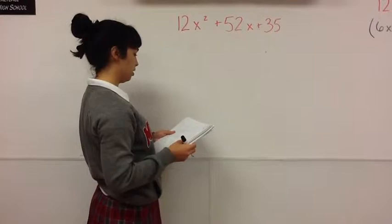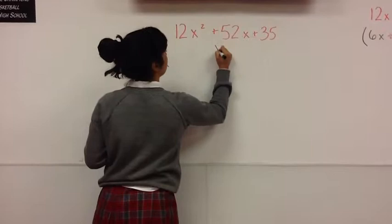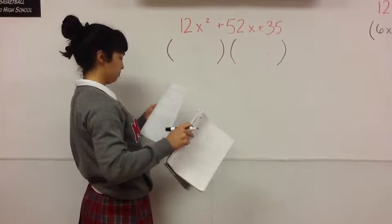The first thing you look for is greatest common factor. Since there is no greatest common factor, now you have to look for a trinomial or difference of two perfect squares.